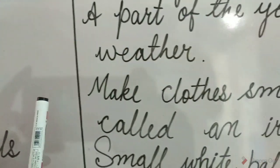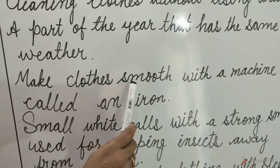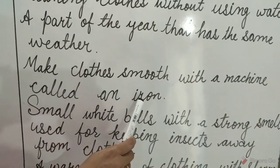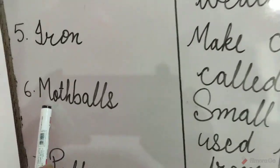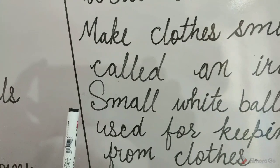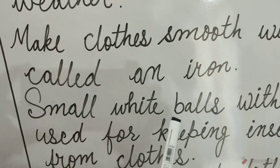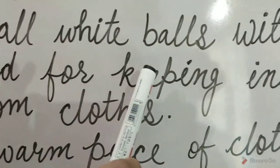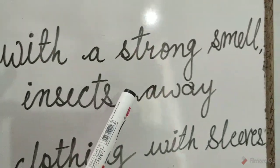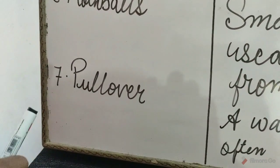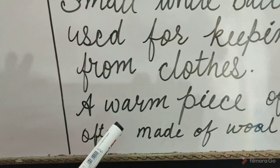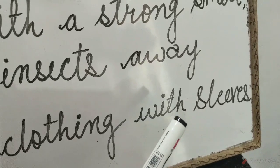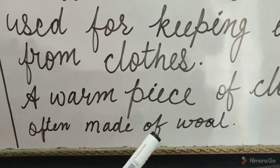5. Iron means to make clothes smooth with a machine called an iron. 6. Moth balls means small white balls with a strong smell used for keeping insects away. 7. Pullover means a warm piece of clothing with sleeves, often made of wool.